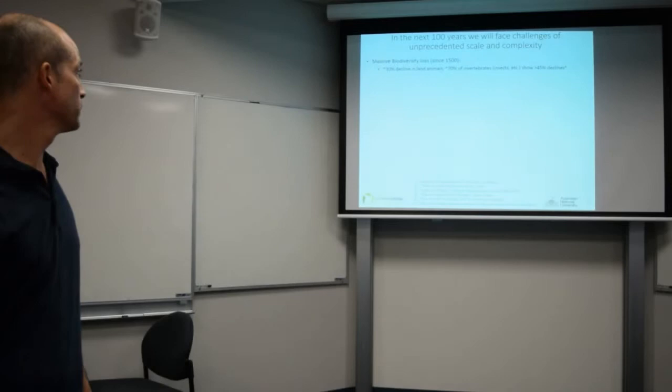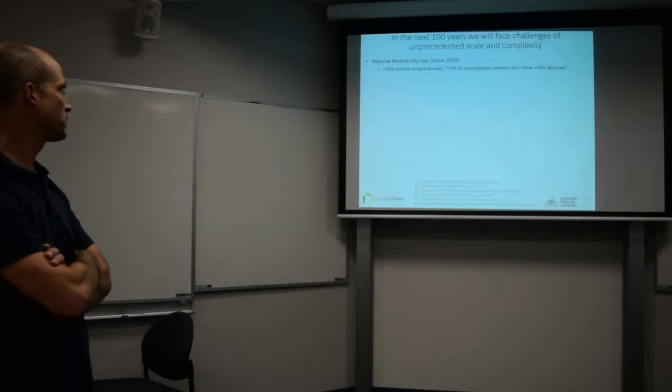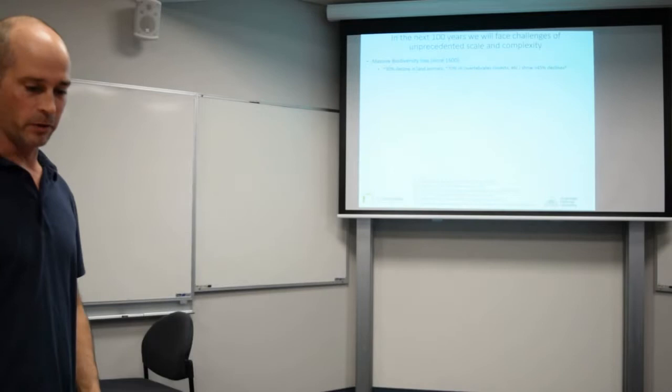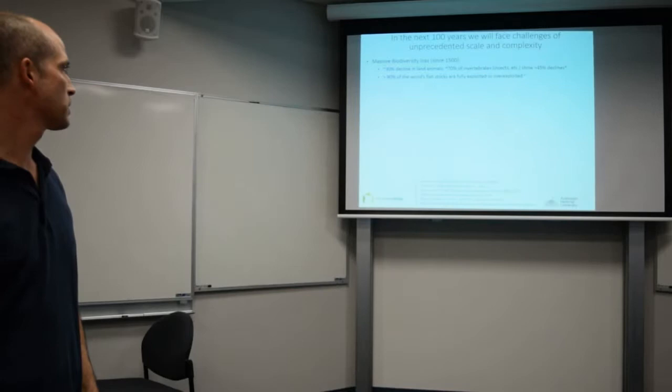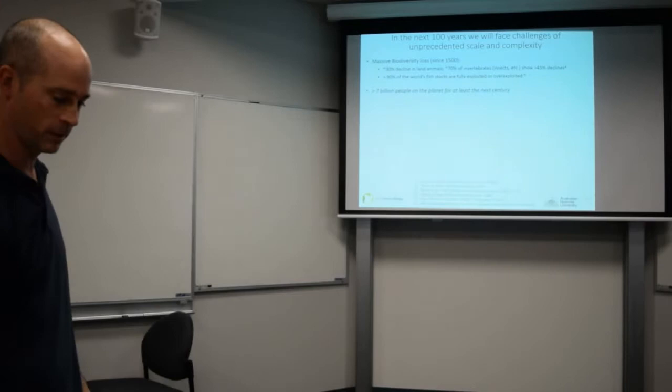The reason this matters is because the next hundred years are going to be a huge deal in human history. Since 1500 we've seen massive biodiversity loss with 30% decline in land mammals and 70% of invertebrates showing greater than 45% declines. 90% of the world's fish stocks are exploited and there's going to be more than 7 billion people on this planet for the next century at least.